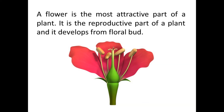A flower is the most attractive part of a plant. You all see a variety of plants around you, and you have learned about the parts of a plant: stem, leaf, root, flower, bud, and fruit. But the flower is the most beautiful and attractive part of the plant. It is the reproductive part, and it develops from a floral bud. The flower is responsible for sexual reproduction in plants.